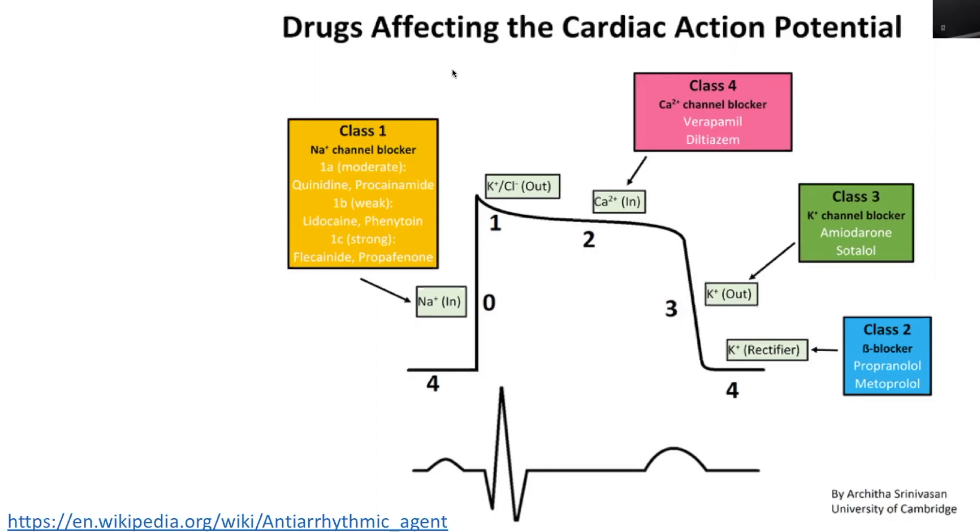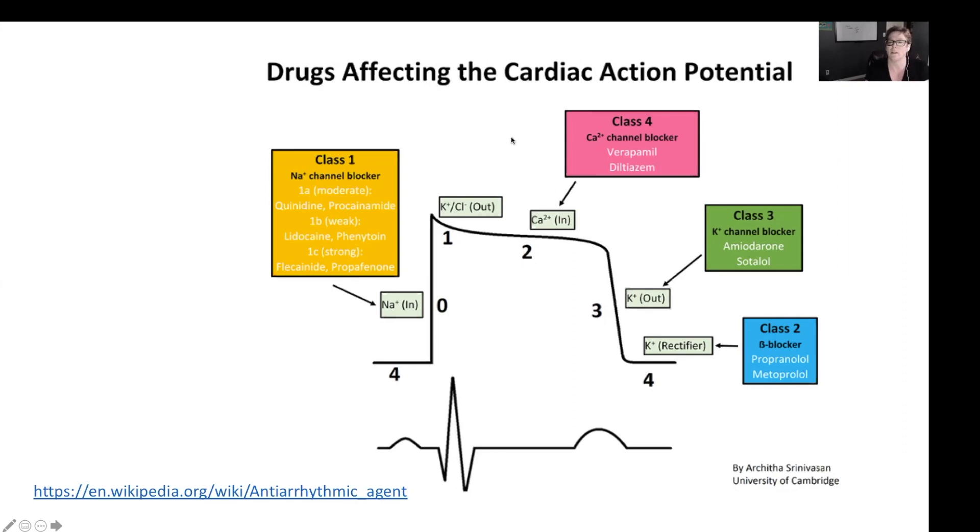When we look at class two drugs, that's the blue box. They affect phase four. Phase four is our relaxation phase, our repolarization phase, and so this is the movement of potassium back into the cell. This is also going to create an excitation of the vagal nerve, and the vagal nerve, as we talked about, helps to calm and slow things down.